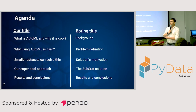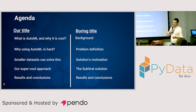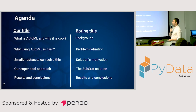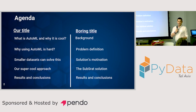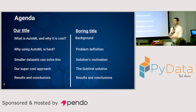Agenda, quickly. What is AutoML and what is cool — background. Why using AutoML is hard — prominent definition. Smaller databases can solve things — solution motivation. Our super cool approach — the abstract solution. And results and conclusions. It's straightforward, guys.